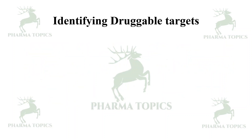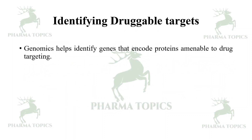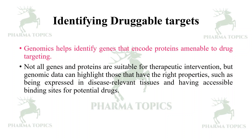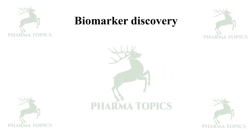Identifying druggable targets: genomics helps identify genes that encode proteins amenable to drug targeting. Not all genes and proteins are suitable for therapeutic intervention, but genomic data can highlight those genes that have the right properties — such as being expressed in disease-relevant tissues and having accessible binding sites for potential drugs.